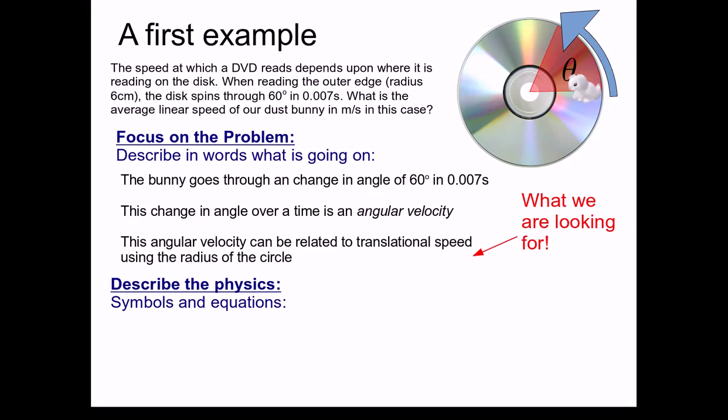So now let's move on to describing the physics using symbols and equations. Well, the change in the angle, which I'll call delta theta, is equal to 60 degrees. This was given in the problem. But remember, we don't ever want to work in degrees. We want to work in radians. So I'm going to multiply by π radians over 180 degrees to get π over 3 radians, for delta theta. We're also given the delta time, delta t that this takes for this bunny to go around 60 degrees. And the radius of the circle, 0.06 meters.